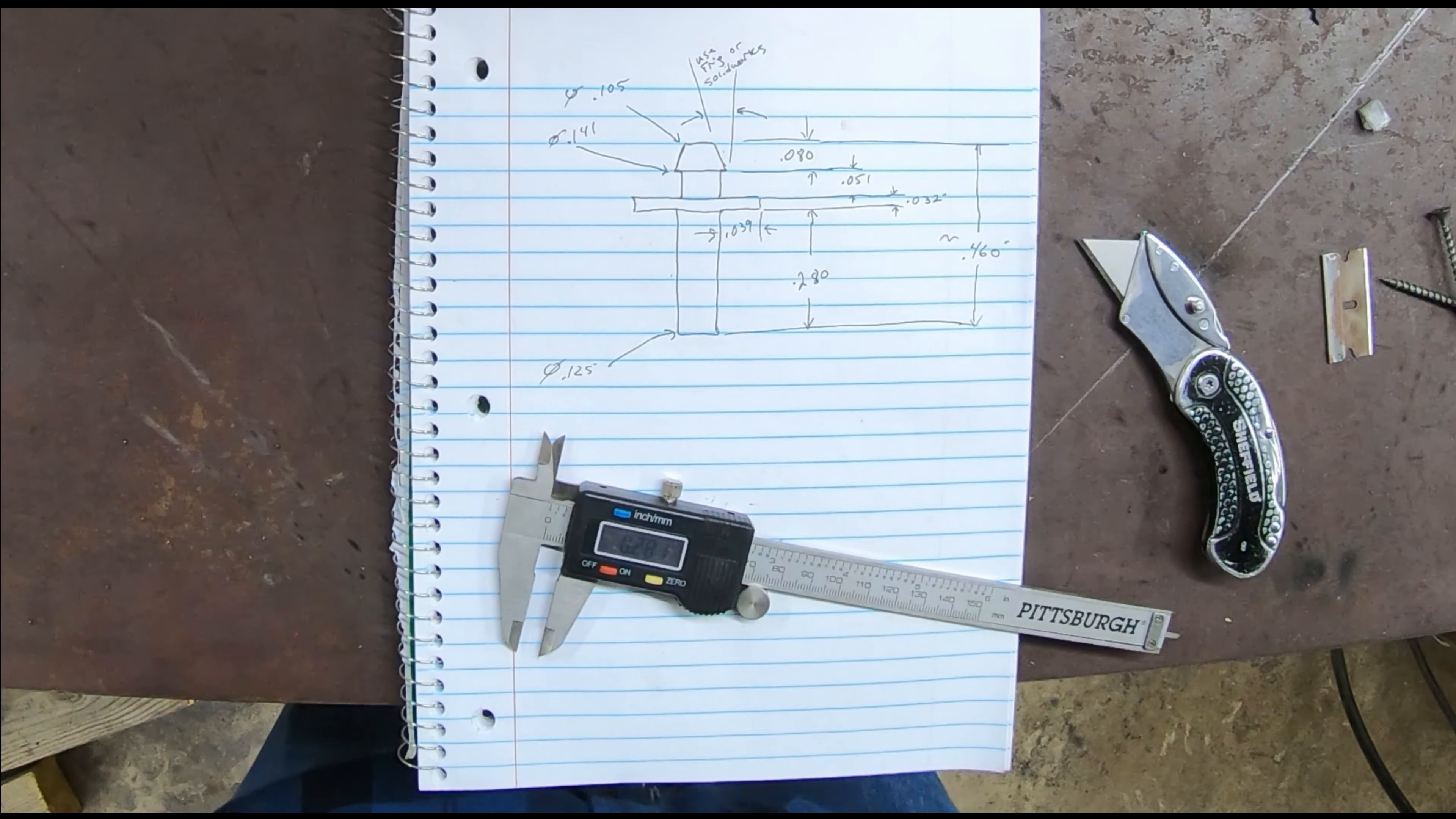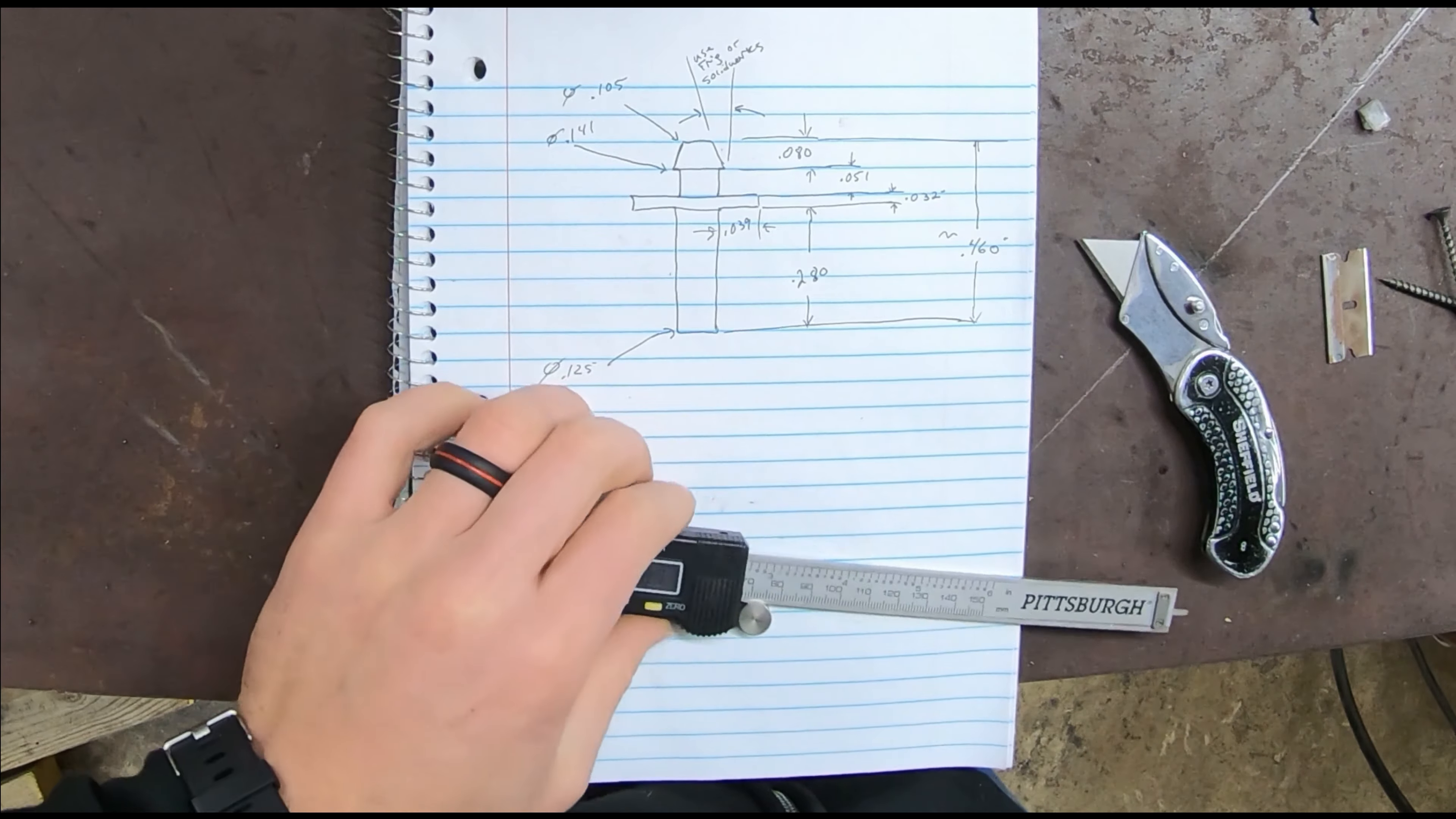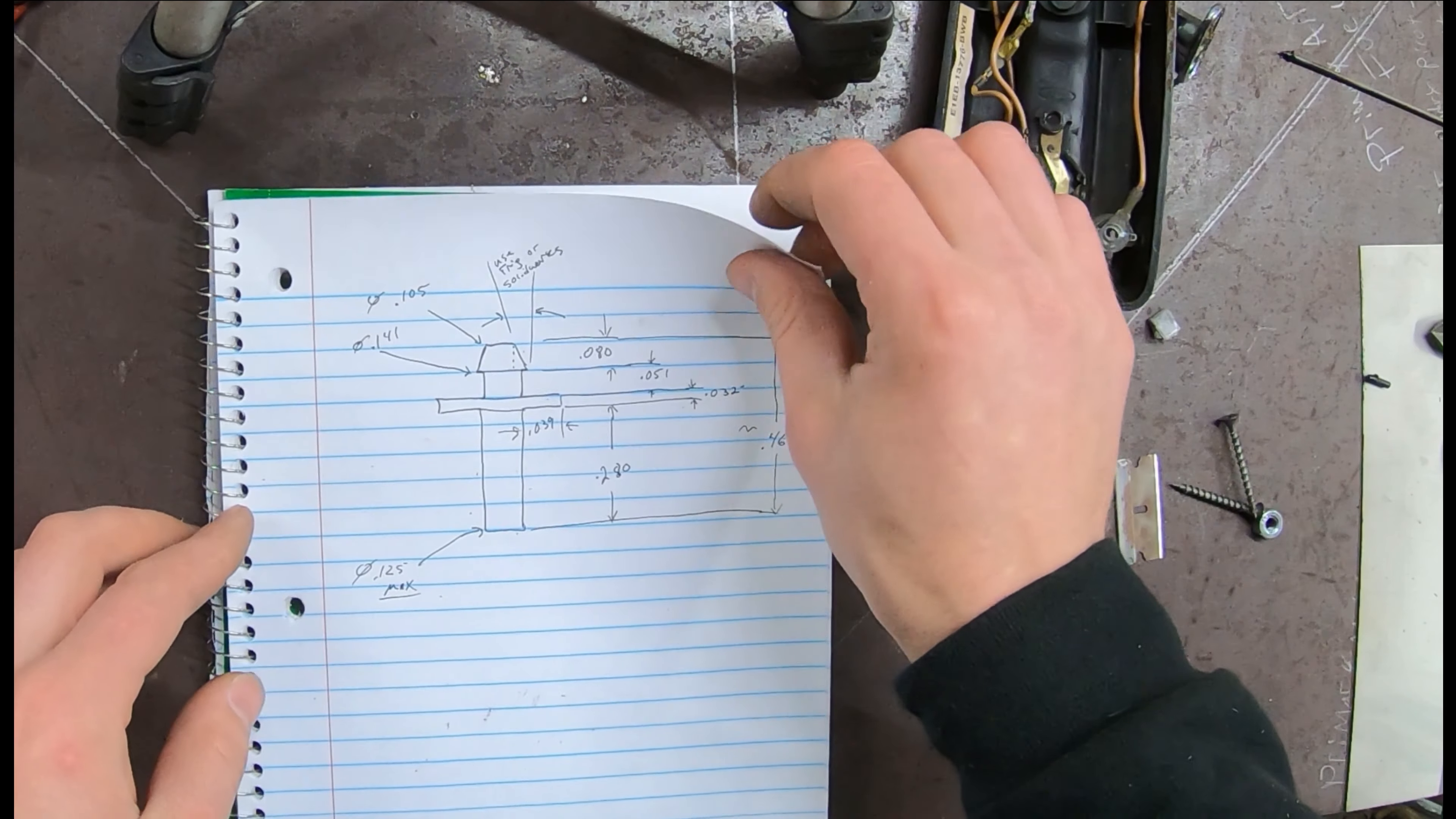All right, now I've got some dimensions made up. I'll make a 3D print. I've got everything pretty accurate. Sometimes with a 3D print, they'll print a little oversized on the OD or a little undersized on the ID. Let's go make a drawing and print it out.